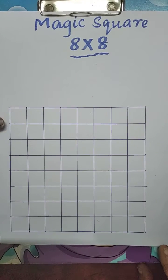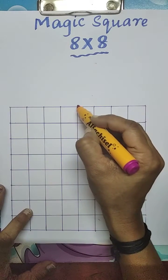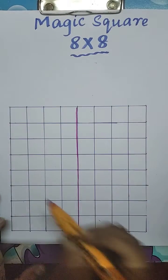First we have to mark the diagonals and we have to divide the boxes like this. 1, 2, 3, 4. Four by four boxes we have to mark.